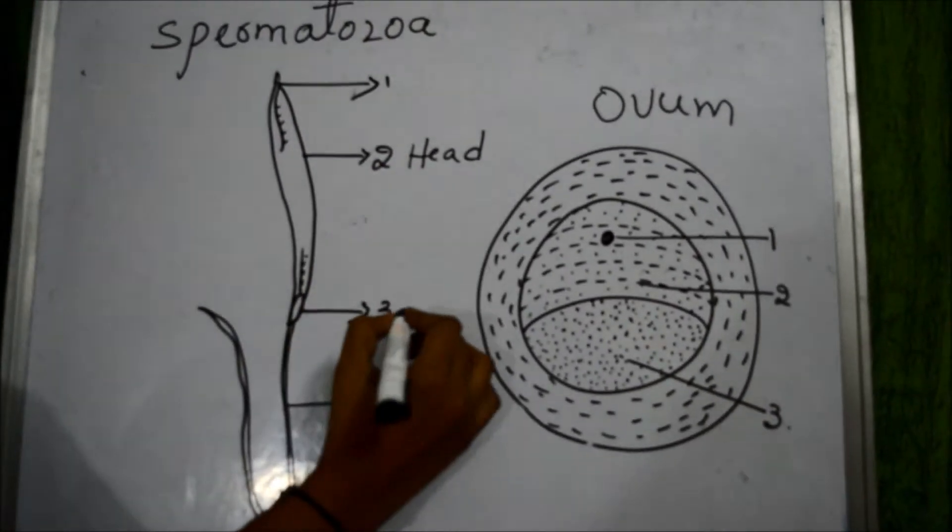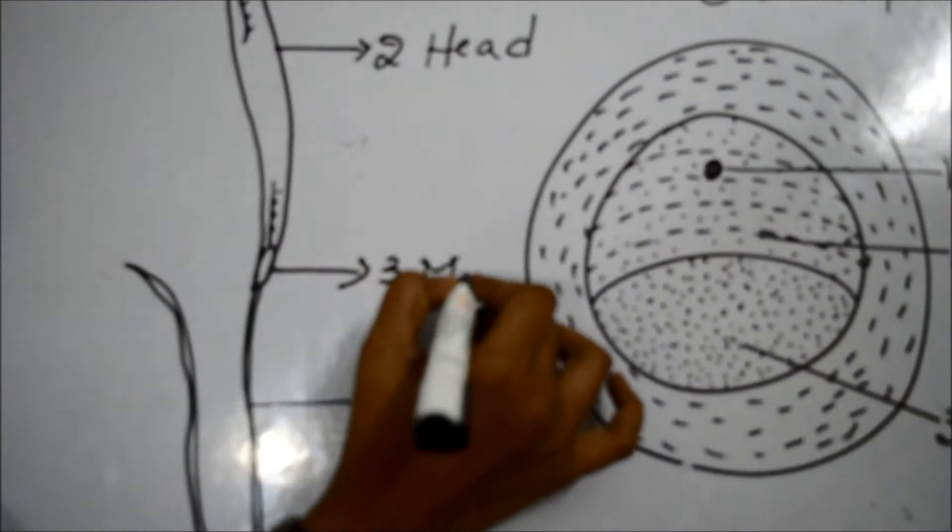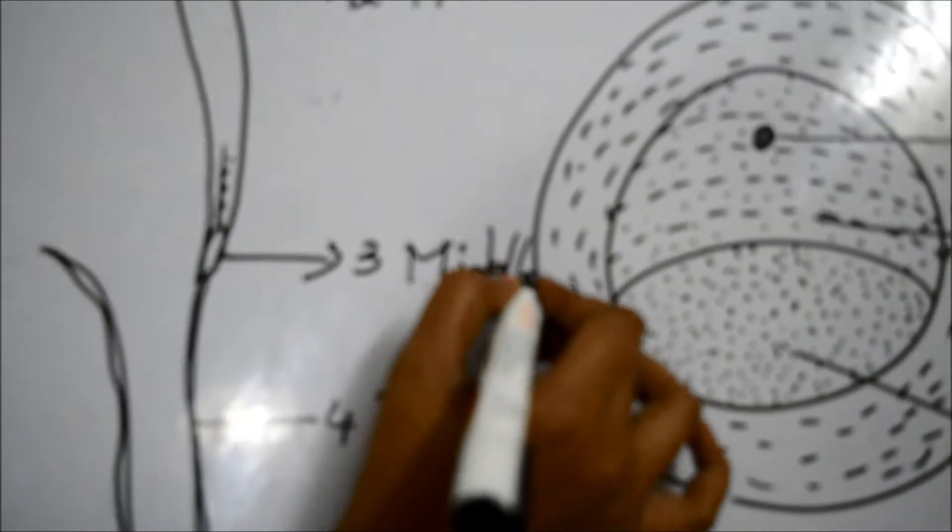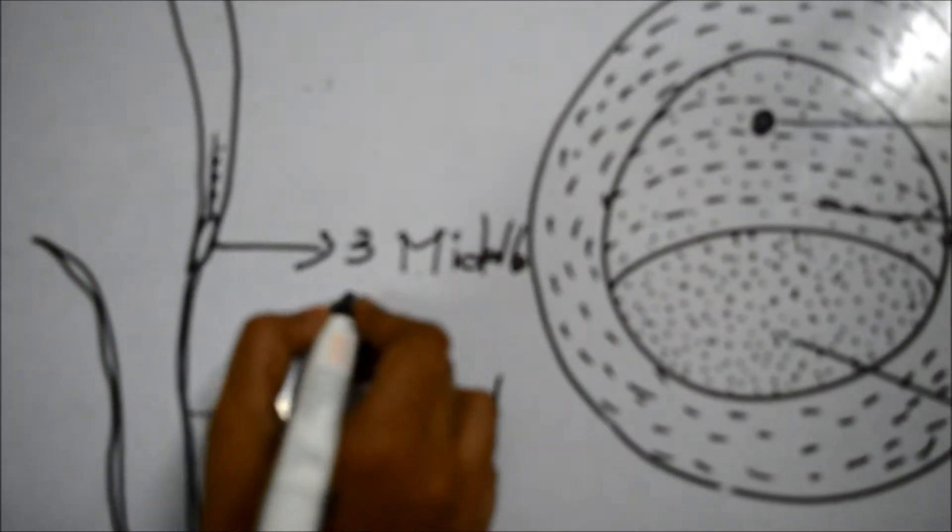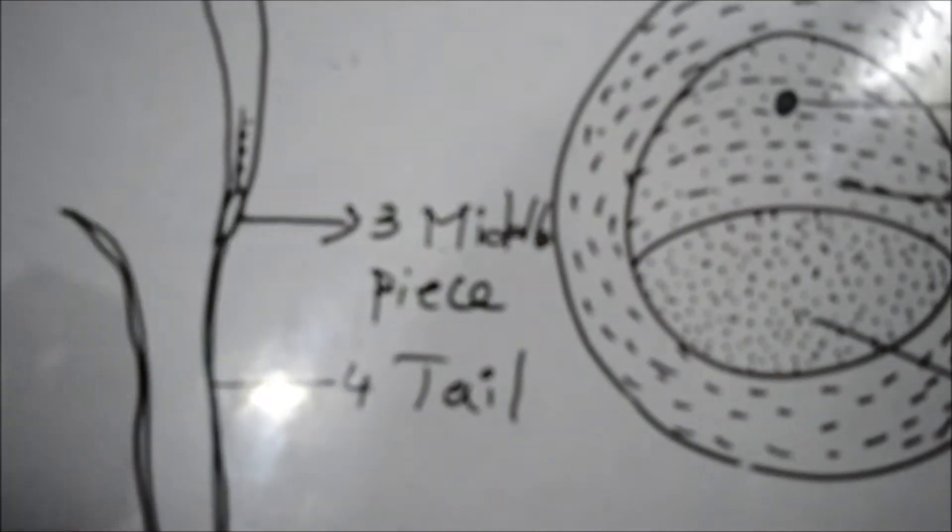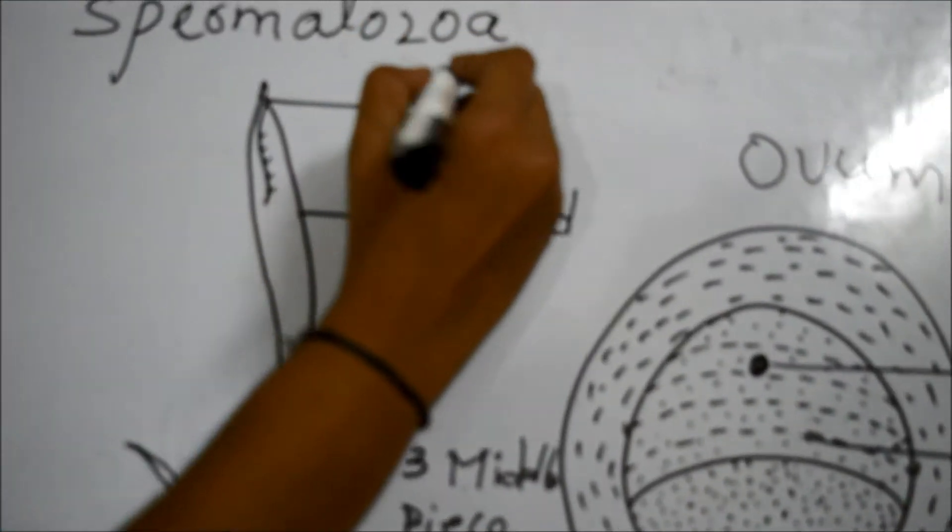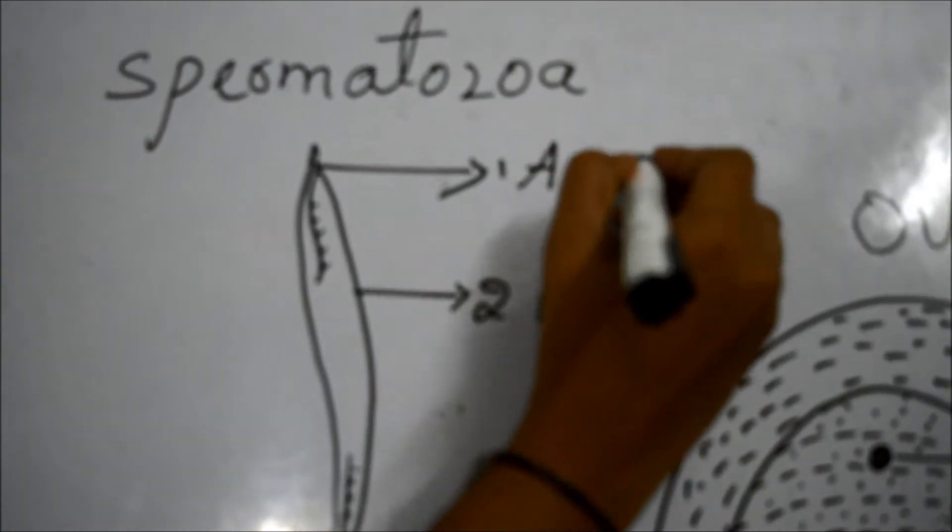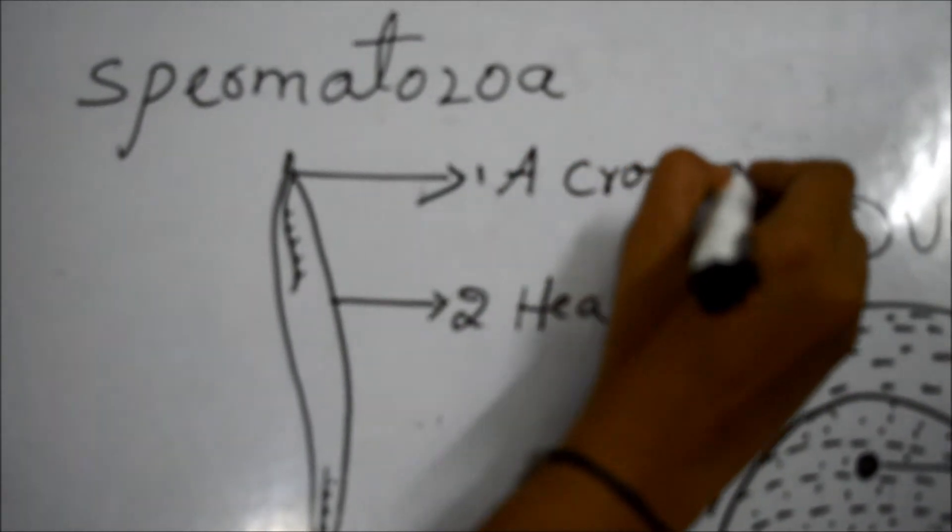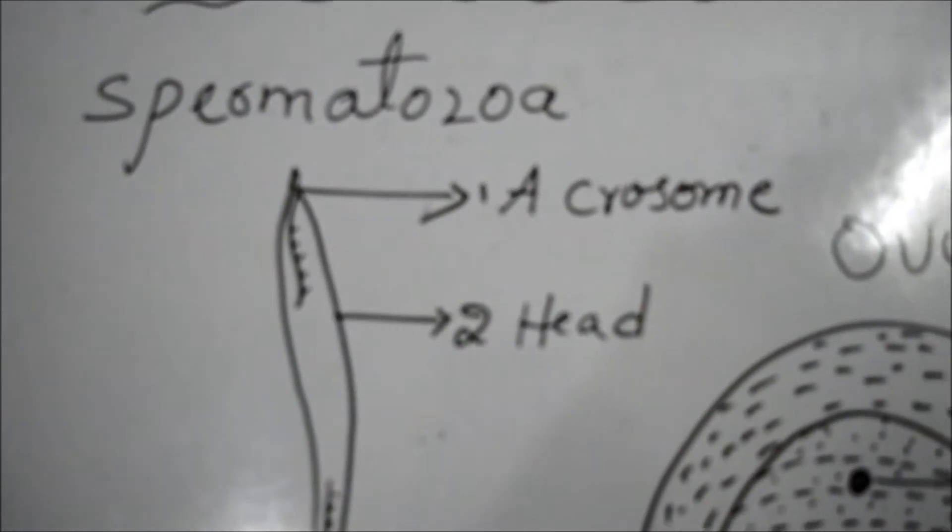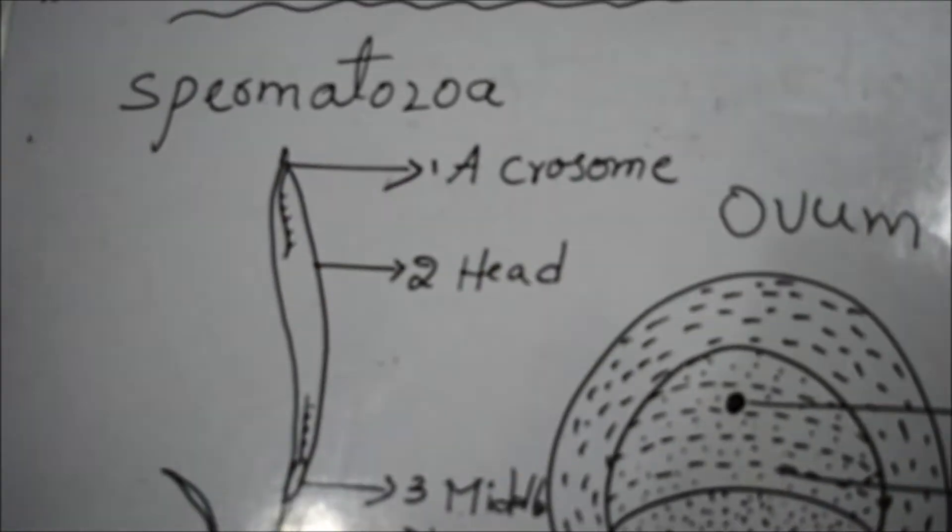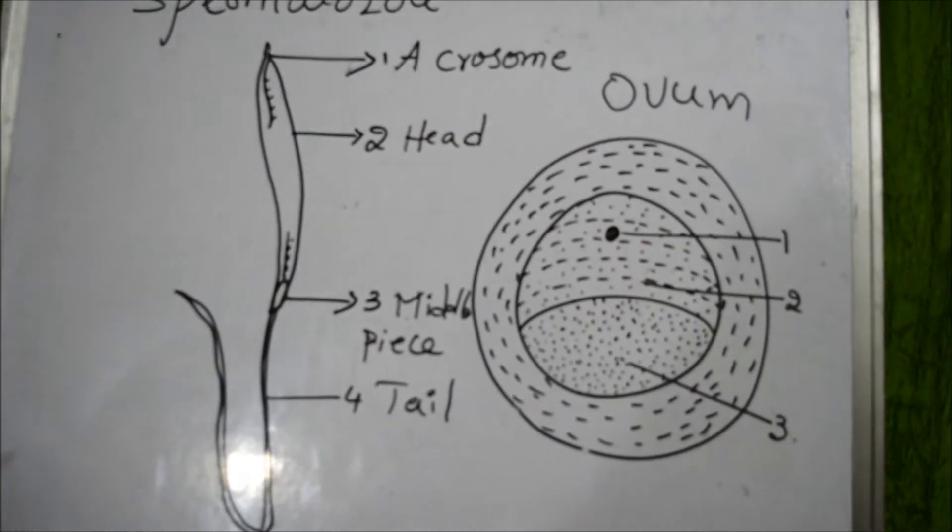This head and tail connects with middle piece. Middle piece, and a part here we can call as acrosome. This is the part. These are the four parts present in spermatozoa.